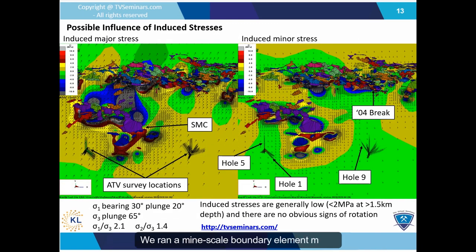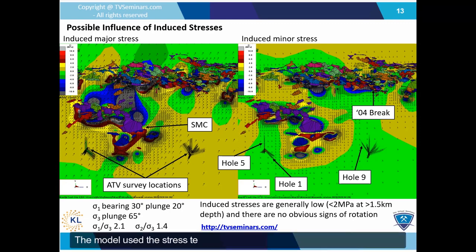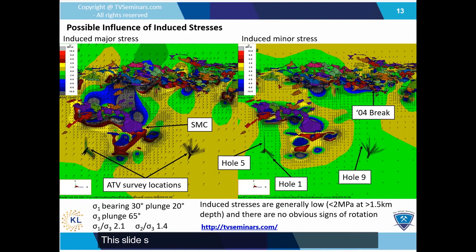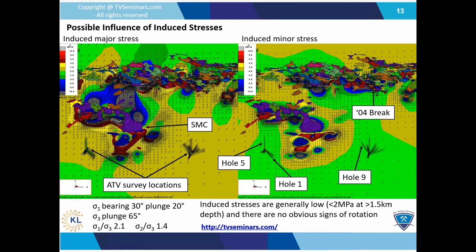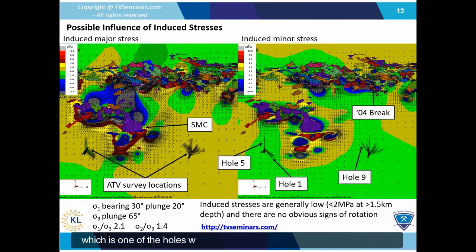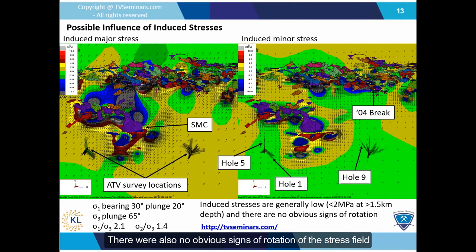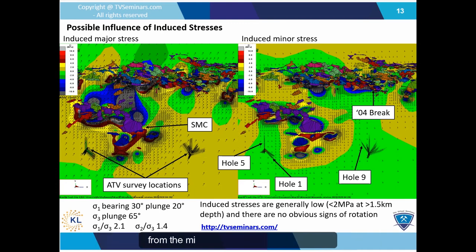We ran a mine-scale boundary element model to check the influence of induced stresses on the surveyed holes. The model used the stress tensor obtained from overcoring at the 6,300 level. This slide shows plan views of induced major and minor stresses at the 5,600 level and the locations of the surveyed holes. We saw very small induced stress influences at the hole locations, mostly less than 1 MPa, but around 2 MPa on hole 5, which is one of the holes we suspect was affected by induced stresses. There were also no obvious signs of rotation of the stress field near most hole locations, and we are confident we avoided any significant influences from the mined-out sections.